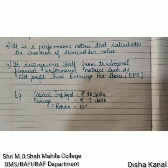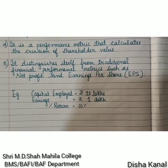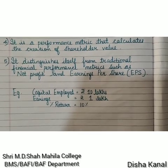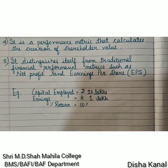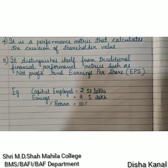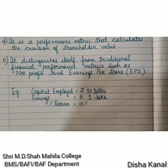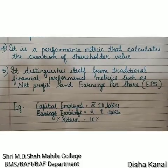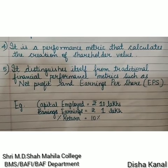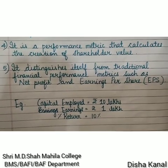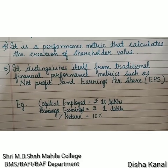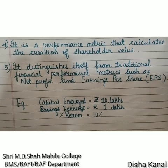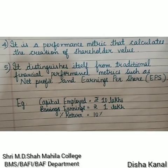Let us take a small example to understand the difference between normal earning and EVA. Capital employed is Rs 10 lakh and earnings is Rs 1 lakh, thus the percentage return is 10%. But in this example the cost of raising capital has not been included, that is why this will not give you the true economic value that the firm has earned.